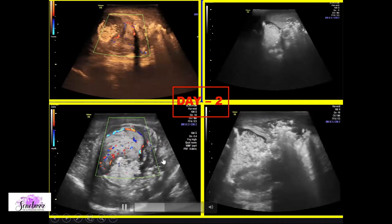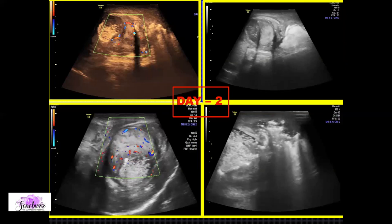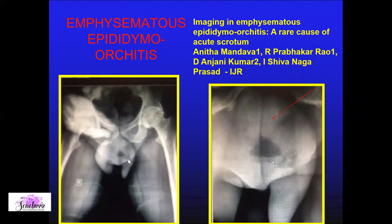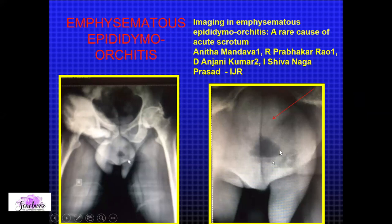Why was the testis full of air? Research revealed this entity is called emphysematous epididymo-orchitis — reported by colleagues Anita and Prabhakar — where in diabetics the epididymis and testis are so severely involved that they become completely replaced with air. Out of interest, a radiograph of the scrotum showed an air-fluid level, confirming emphysematous epididymo-orchitis, which is typically seen only in diabetics.